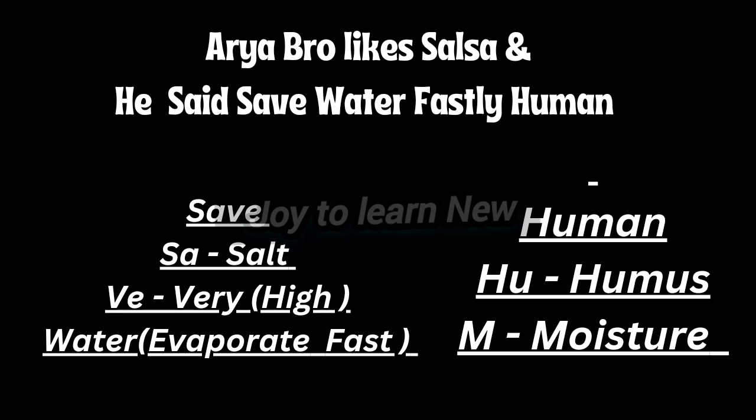Now take the word 'save': SA stands for salt, and V stands for very. 'Water' represents water — meaning in some areas the salt content is very high, and salt is obtained by evaporating water.